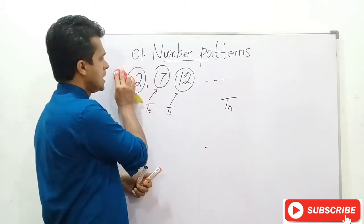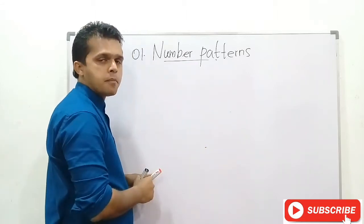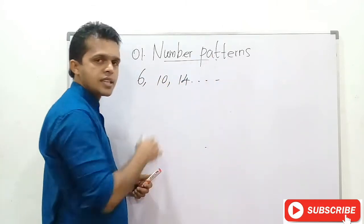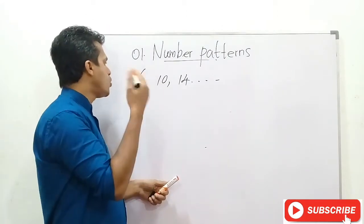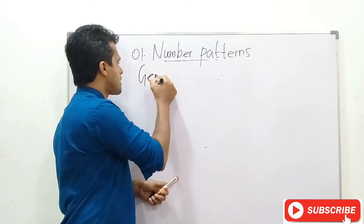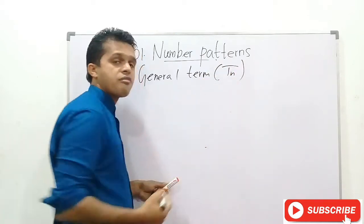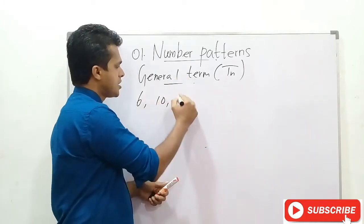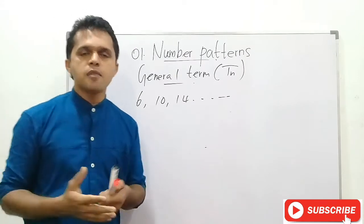Now we are going to learn the method of obtaining the Nth term — the general term — of a number pattern. Consider: 6, 10, 14, and so on, where 6 plus 4 is 10 and 10 plus 4 is 14. Let's find the general term TN of this number pattern. How can you calculate the general term?